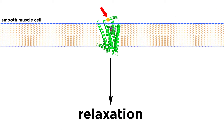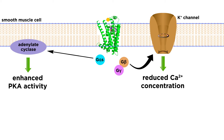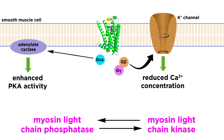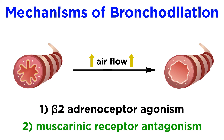In summary, beta-2 adrenoceptor stimulation leads to a relaxation of the smooth muscle cells in the airways by reducing intracellular calcium ion concentrations and enhancing protein kinase A activity. Both of these changes in the intracellular signaling dynamic lead to the equilibrium between myosin light chain phosphatase and myosin light chain kinase shifting towards more phosphatase activity and less kinase activity. This leads myosin light chain to be relatively more dephosphorylated and, as a consequence, less active, causing greater relaxation of airway smooth muscle cells.